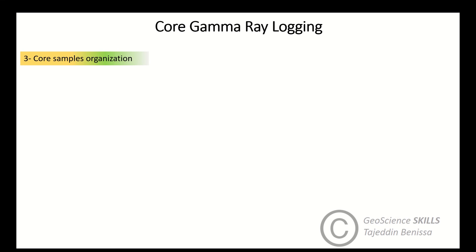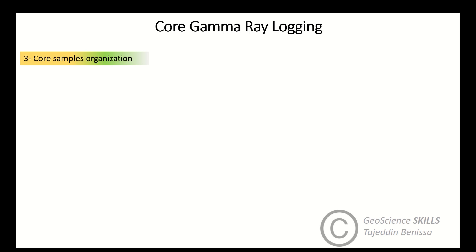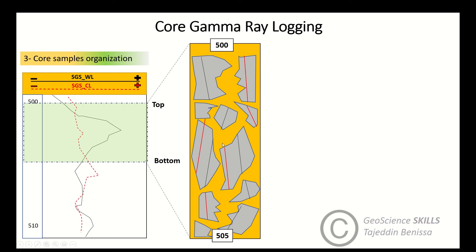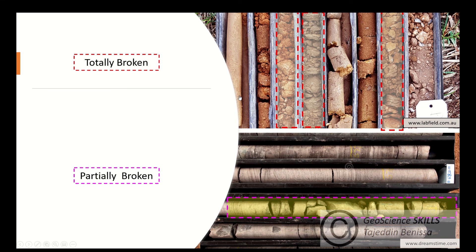Another issue may occur with core gamma log behavior at intervals of broken samples. We can see here that the core gamma behaves differently in terms of values, the trend, and the intensity. Damage ranges from totally broken core like the ones we see here.